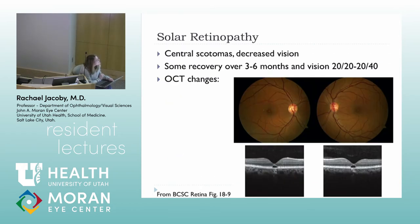This is a classic solar retinopathy picture — a yellowish spot bilaterally with outer retinal damage. Vision can recover somewhat over three to six months.